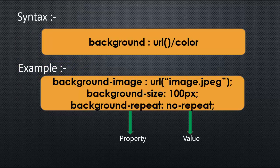Syntax: background is a shorthand property and values can be color, URL, or any numbers like px, percentage, or length. For example, background-image is a property and URL('image.jpg') is a value. Background-size is a property and 100px is a value. Background-repeat is a property and 'no-repeat' is a value — no-repeat is a keyword.